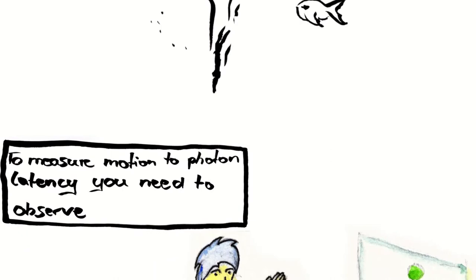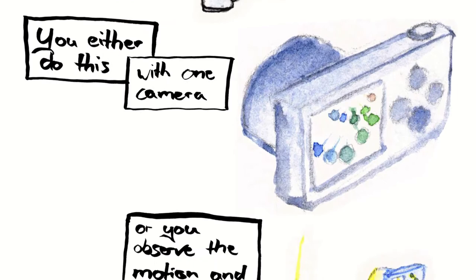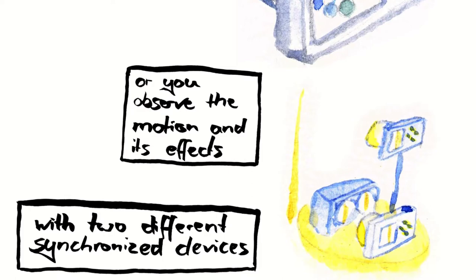To measure motion to photon latency, you need to observe a motion and its respective counterpart on a screen. You either do this with one camera, or you observe the motion and its effects with two different synchronized devices.